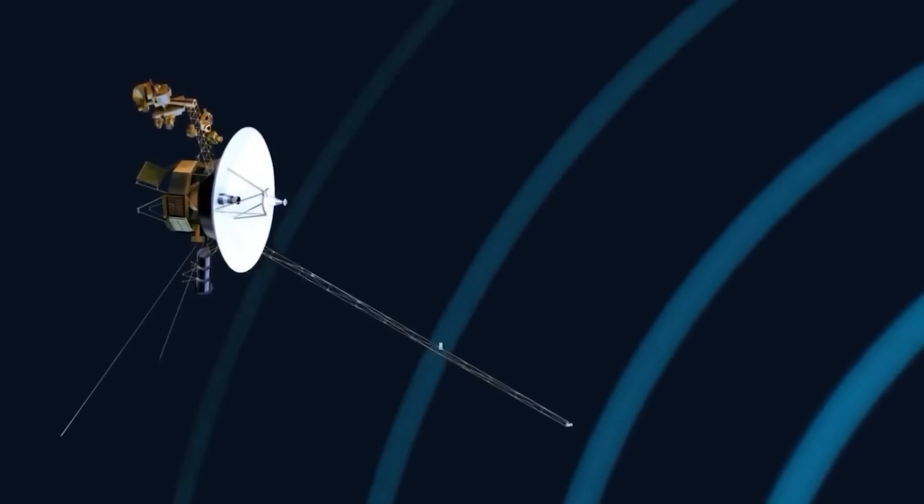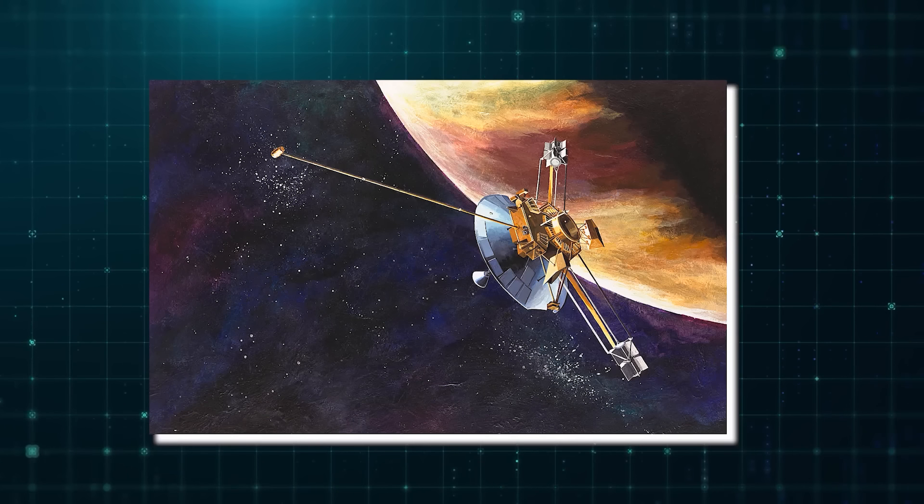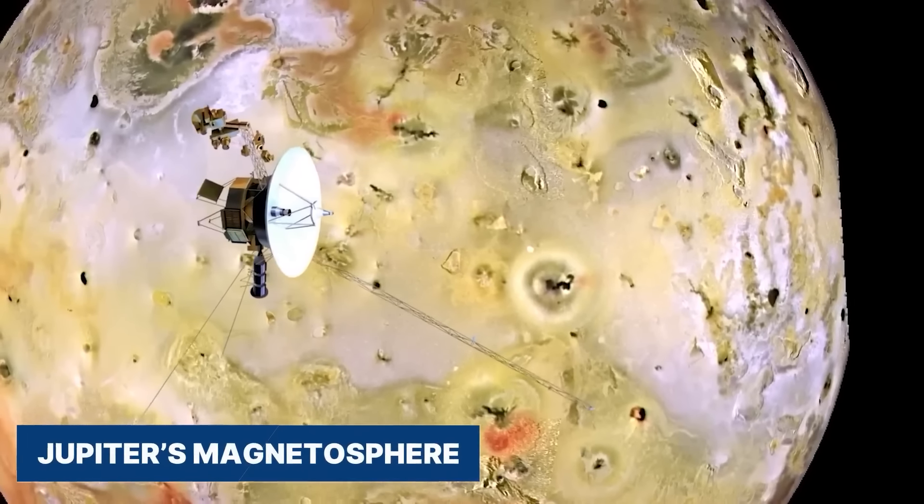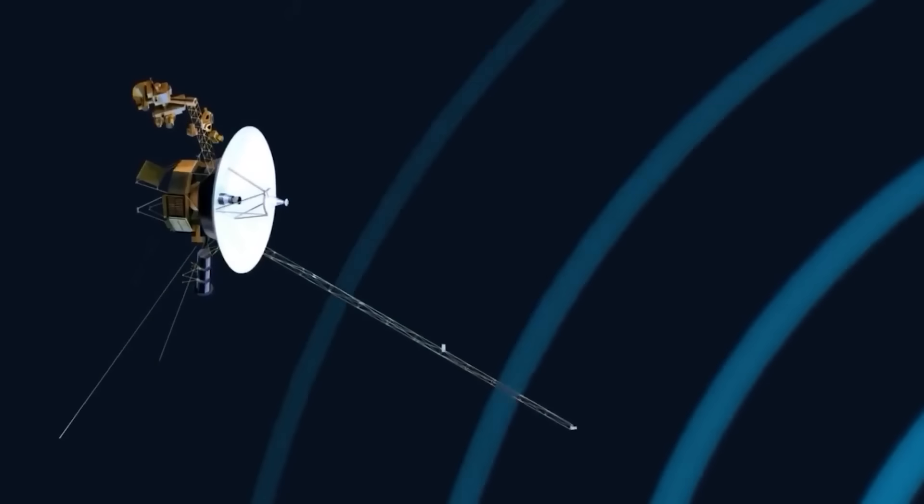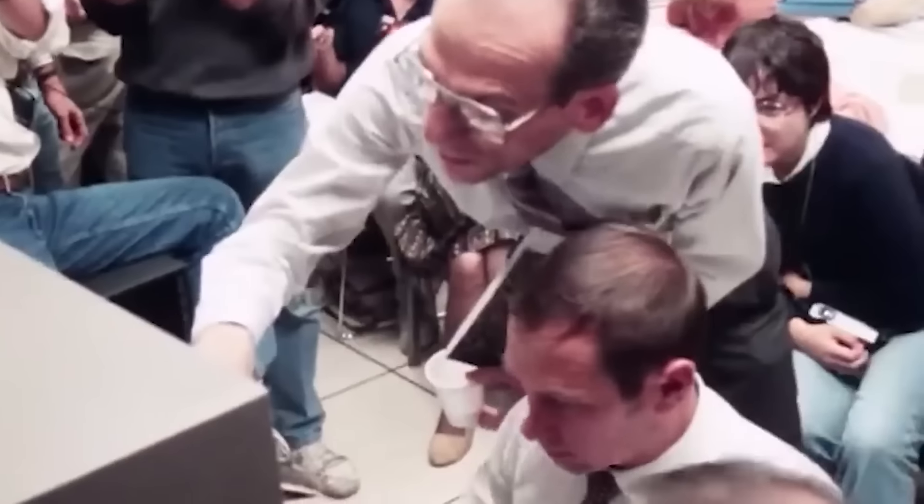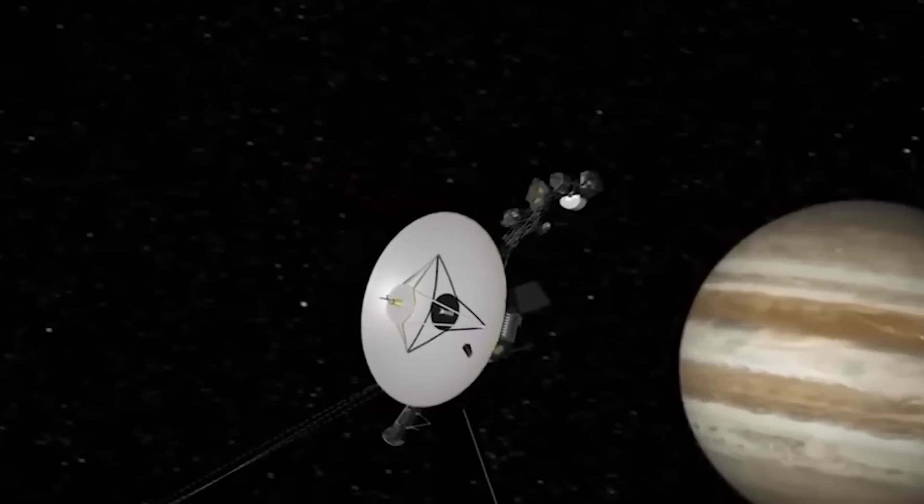One of the most dramatic moments of the Voyager mission was the encounter with Jupiter. As the spacecraft approached the gas giant, they were bombarded by intense radiation from Jupiter's magnetosphere. The Voyagers' instruments were designed to withstand such radiation, but there was always the risk that they might be damaged or destroyed. To everyone's relief, the Voyagers survived the encounter and captured breathtaking images of Jupiter's Great Red Spot, a massive storm that has been raging for centuries.